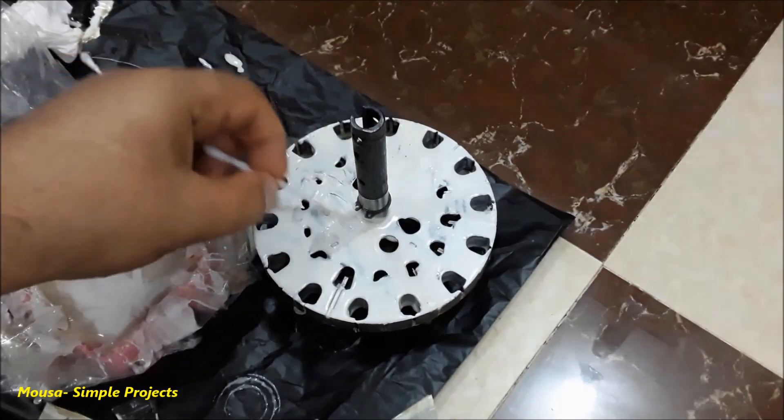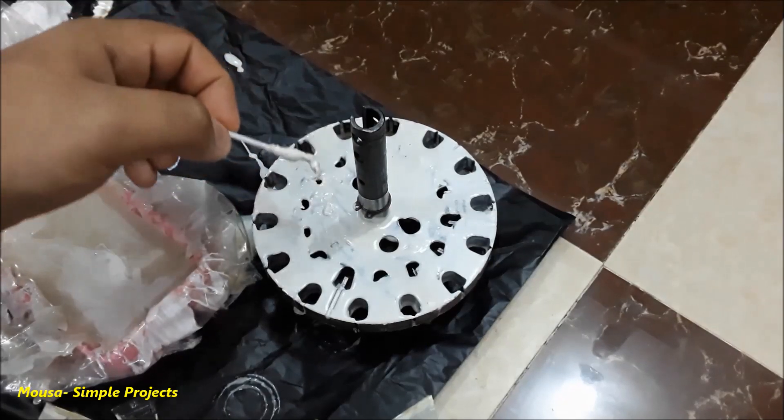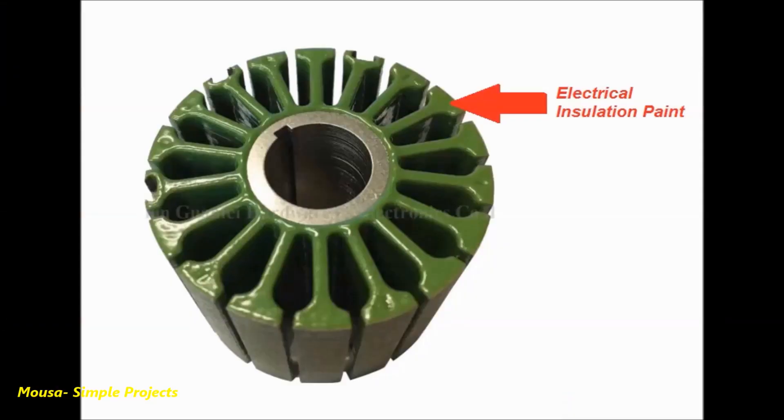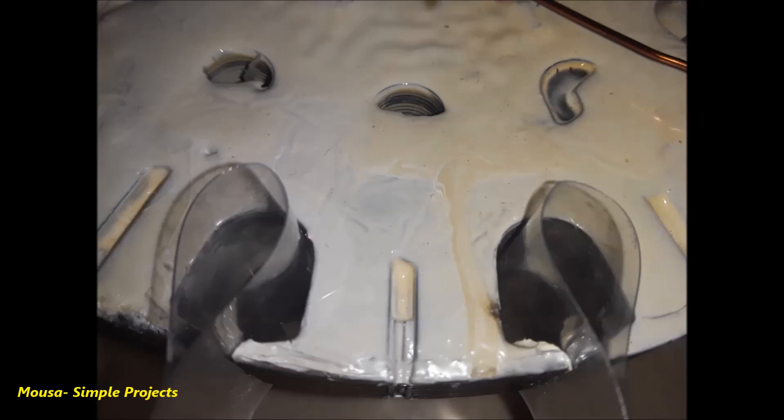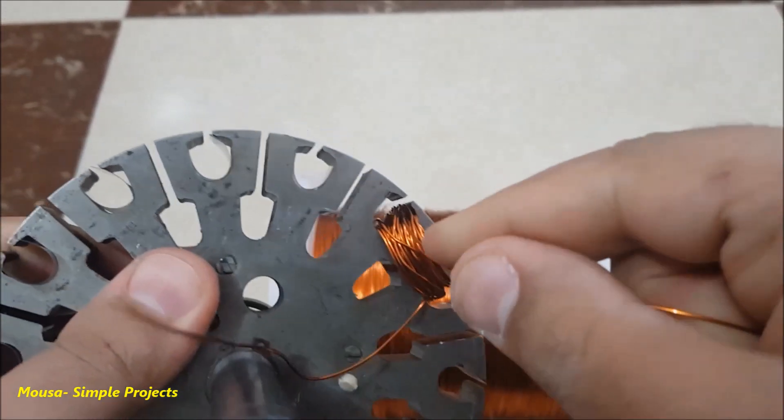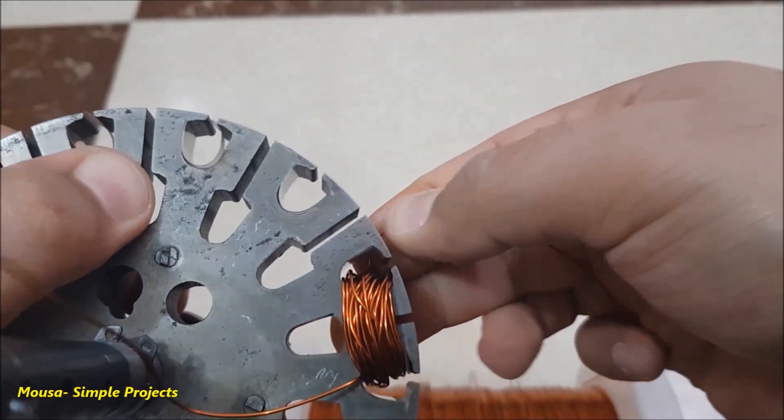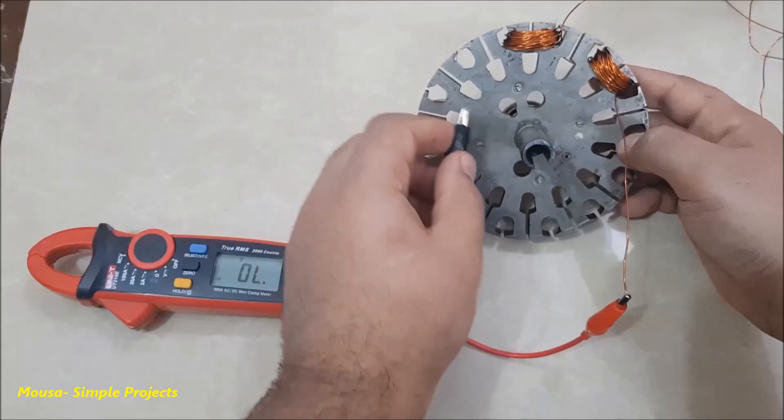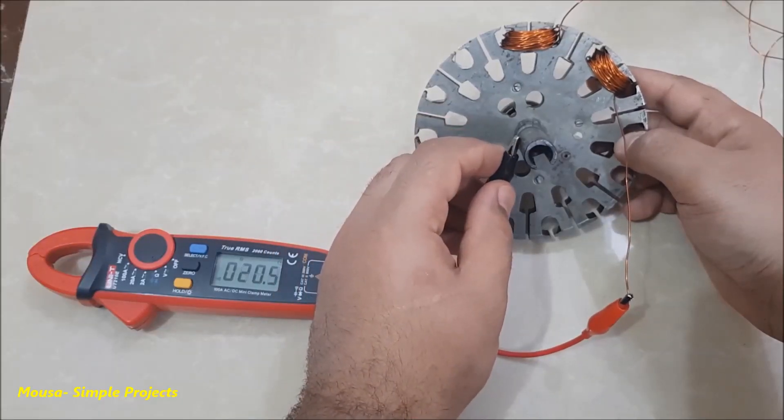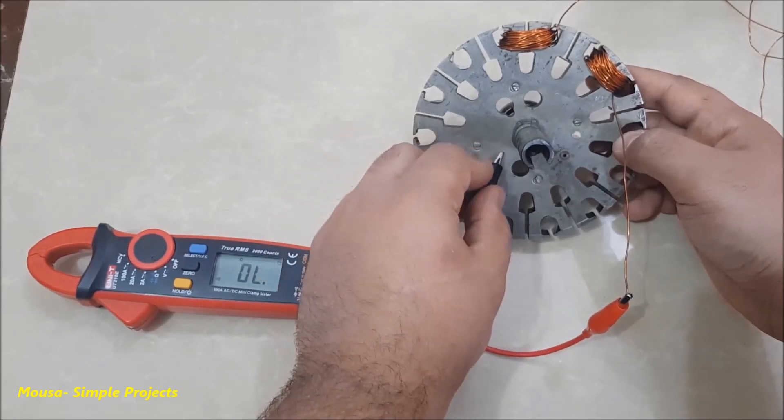To make good insulation between the metal body of the stator and the wires, I paint the stator since commercial BLDC motors also have insulation paint, and I also use some plastic paper. If you wind the wire without insulation, a short circuit happens between the metal body of the stator and the winding wire.